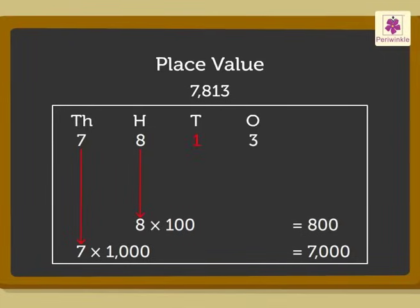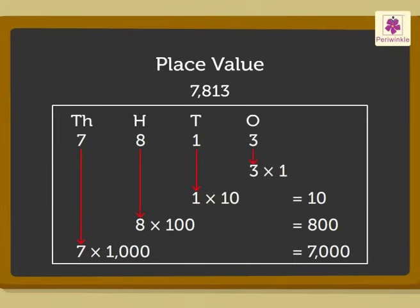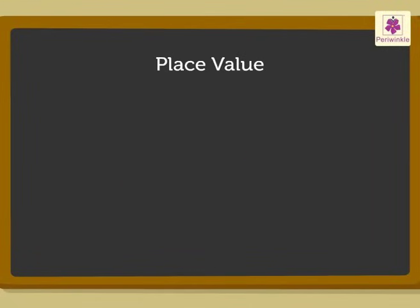As the 1 is in the tens column, it means that there are 1 tens and so its place value is 1 into 10, that is 10. As the 3 is in the ones column, it means that there are 3 ones and so its place value is 3 into 1, that is 3.